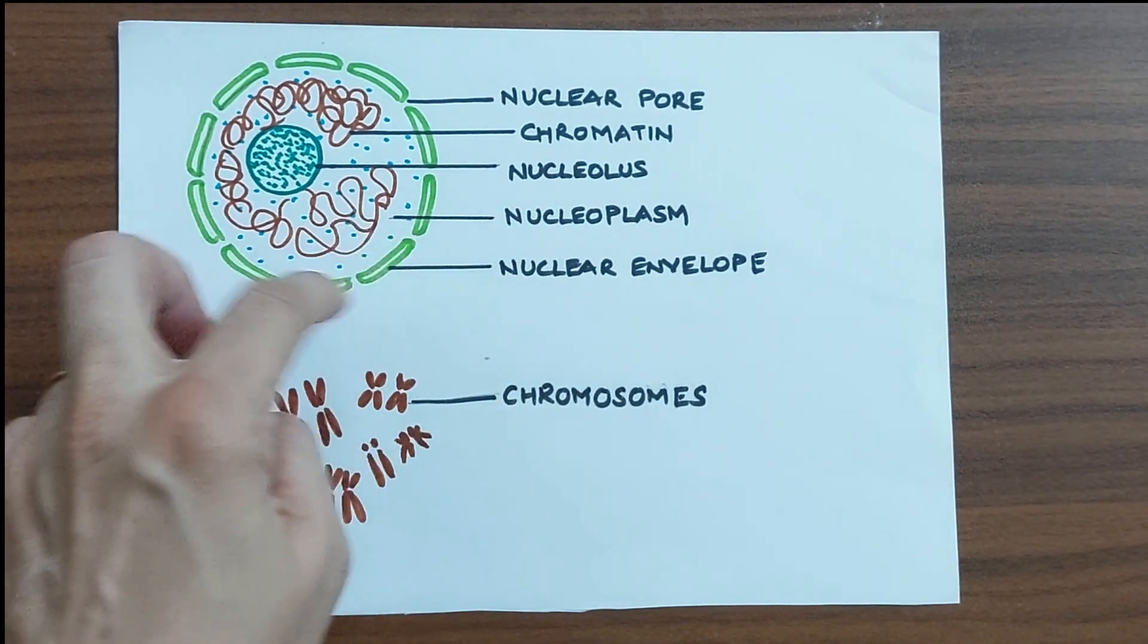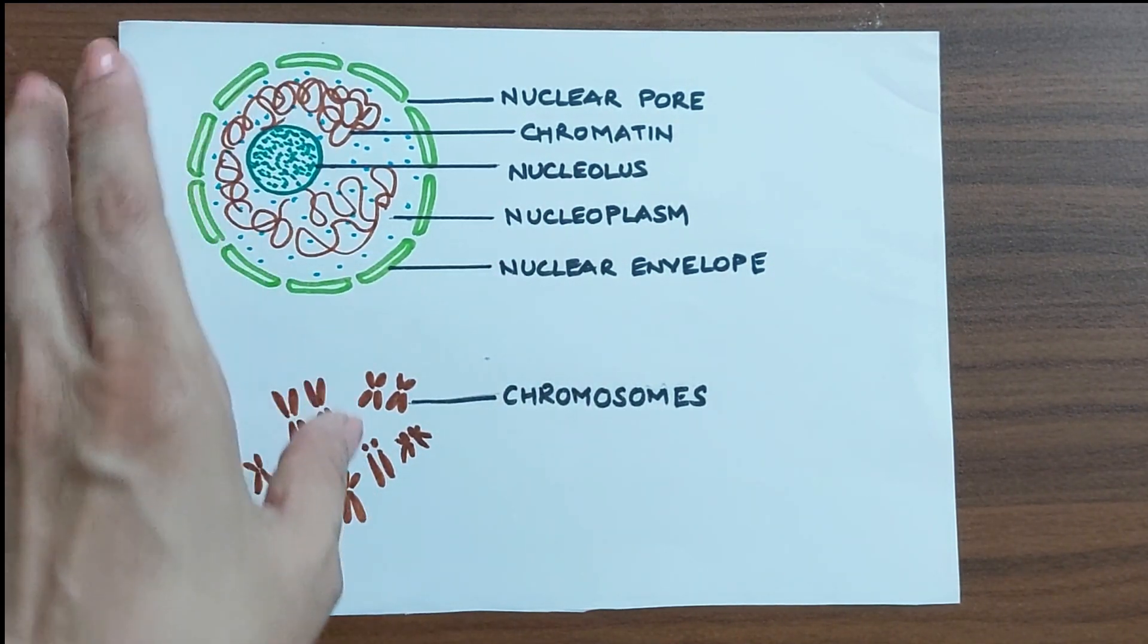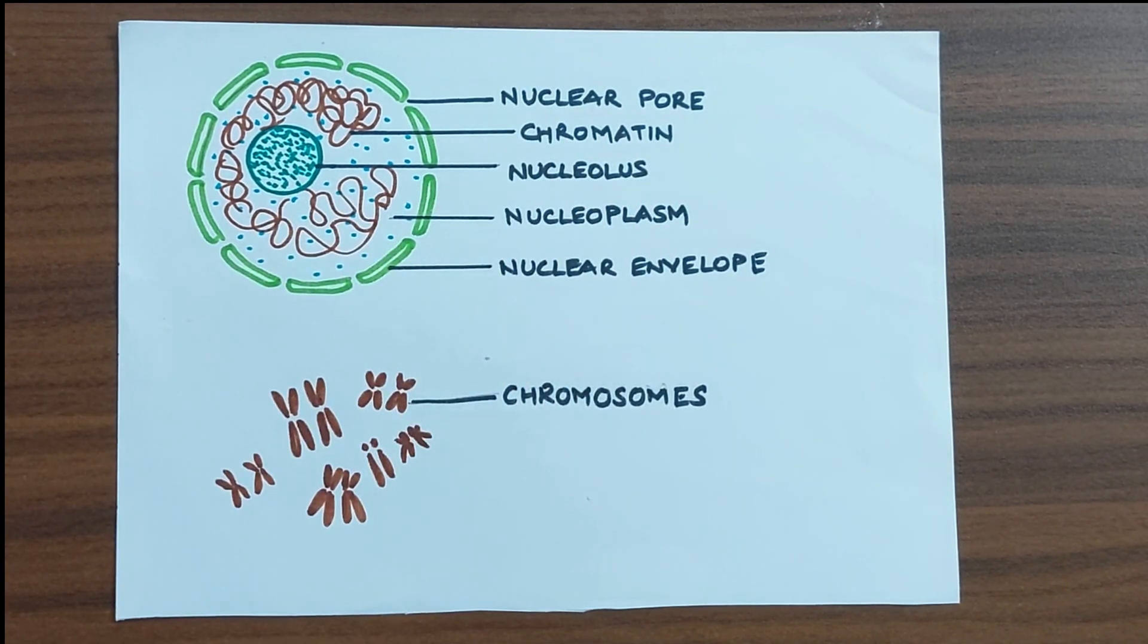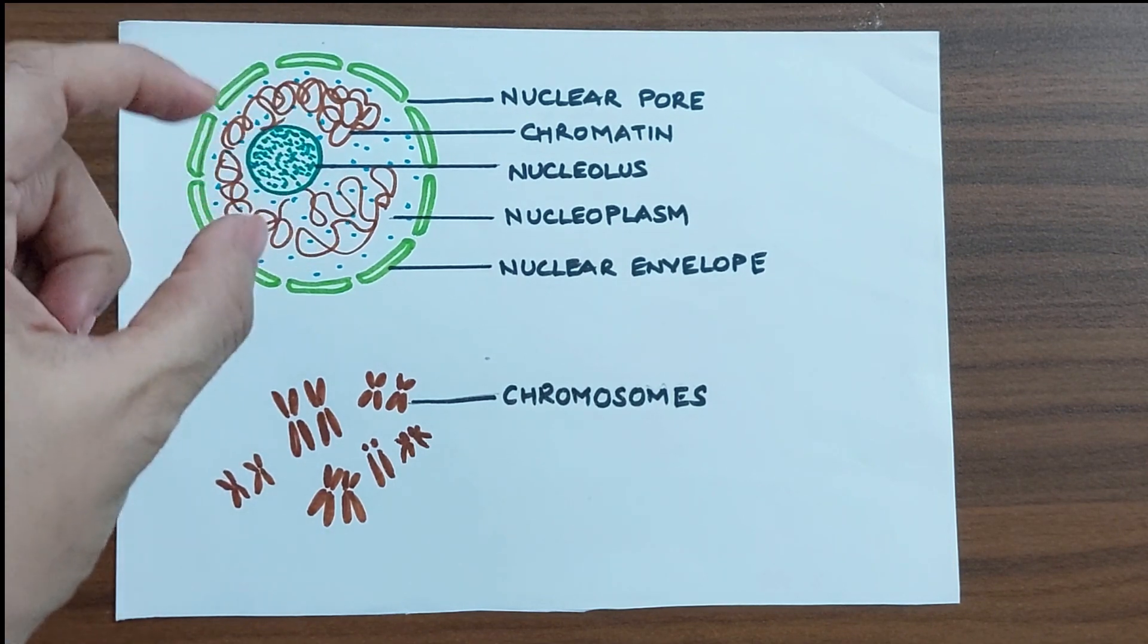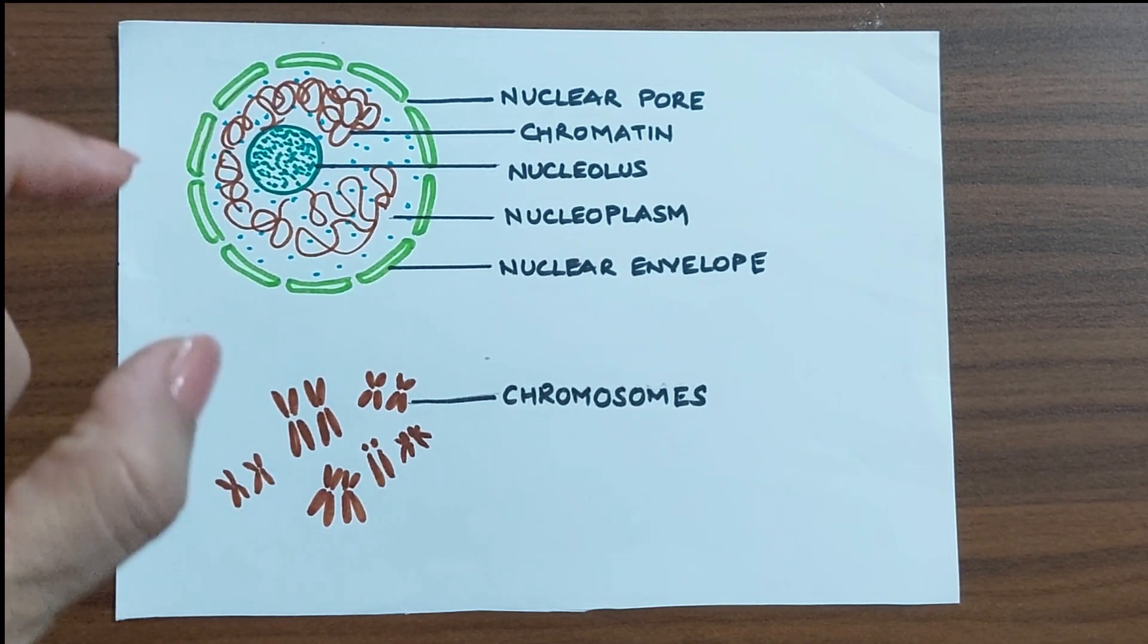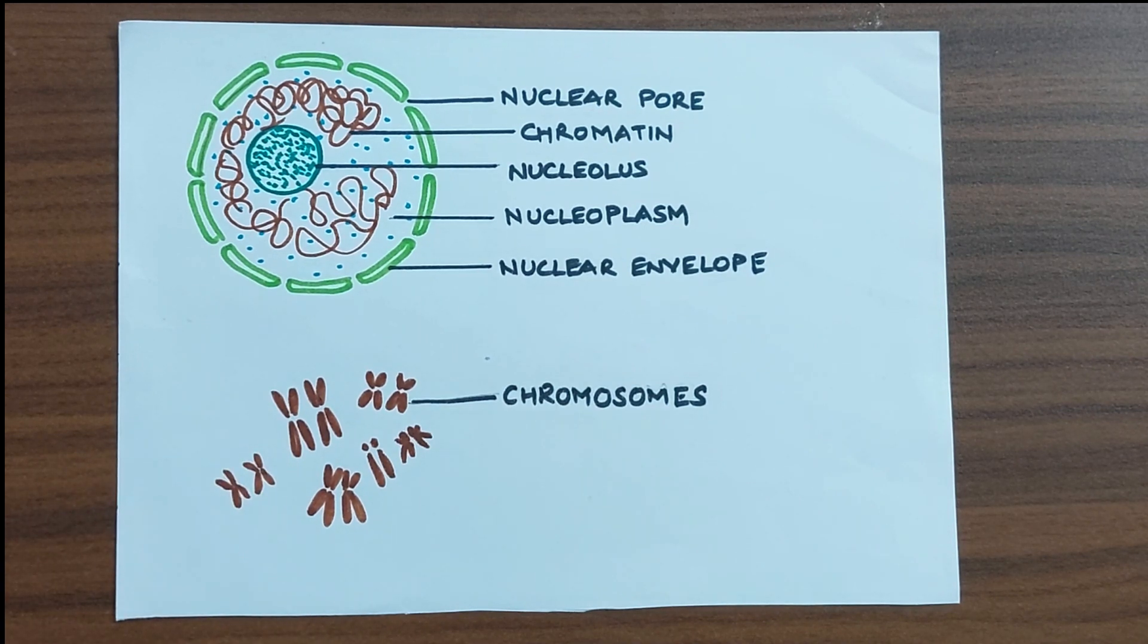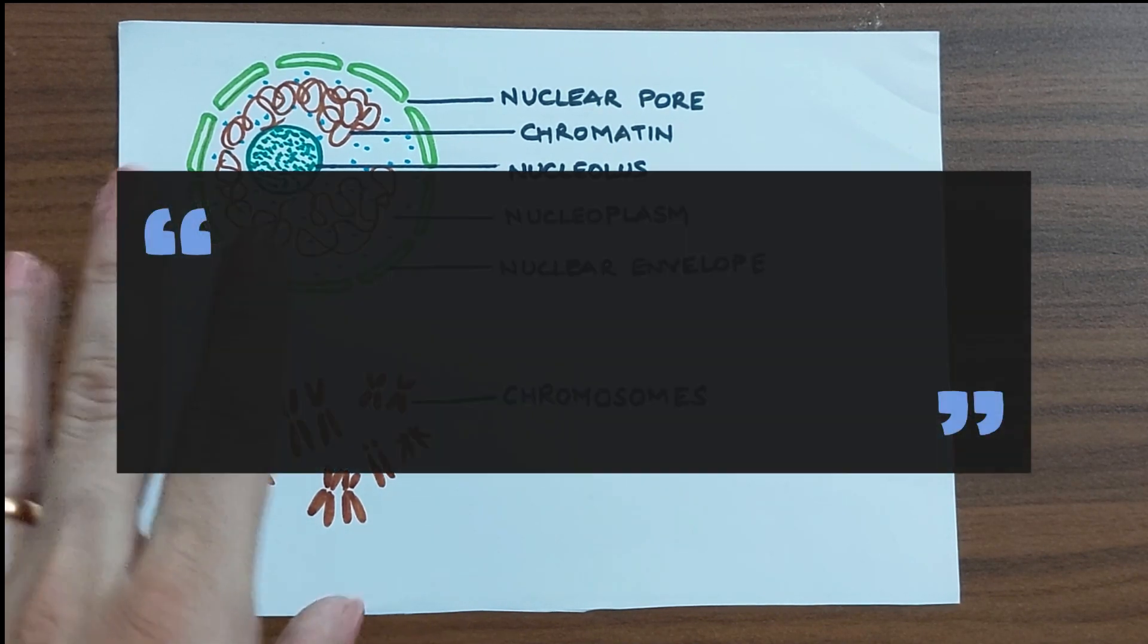Nucleus contains again a dense structure which is known as nucleolus. And it has an entangled mass of thread-like structures which is known as the chromatin material. And it is this chromatin material which contains the genetic material. And at the time of cell division, this chromatin material starts becoming thick rod-like structures which are known as the chromosome.